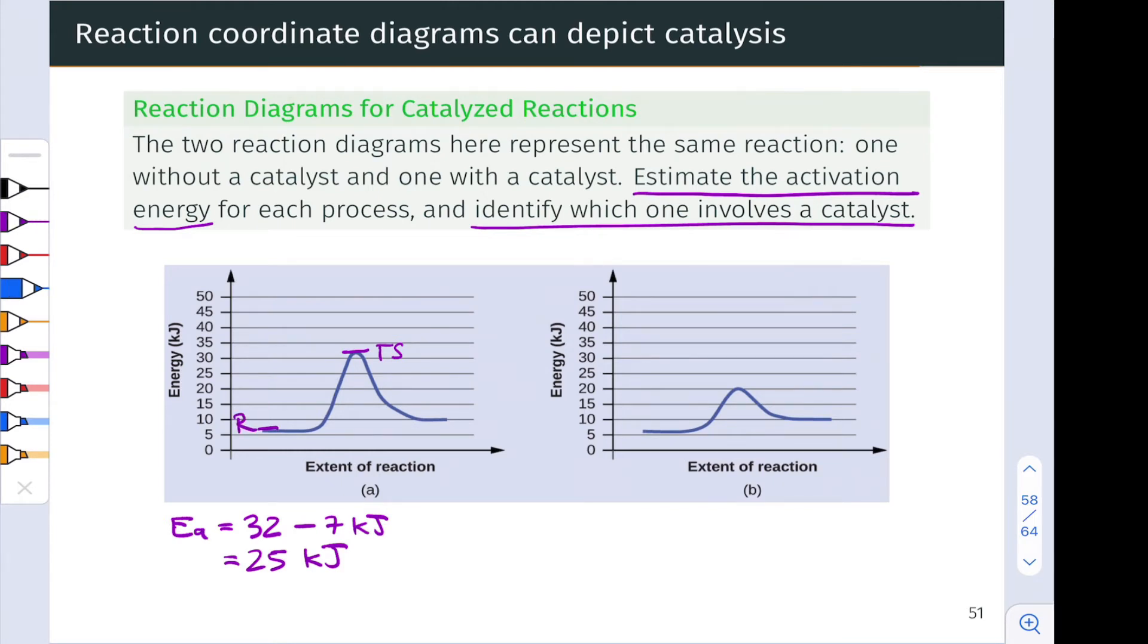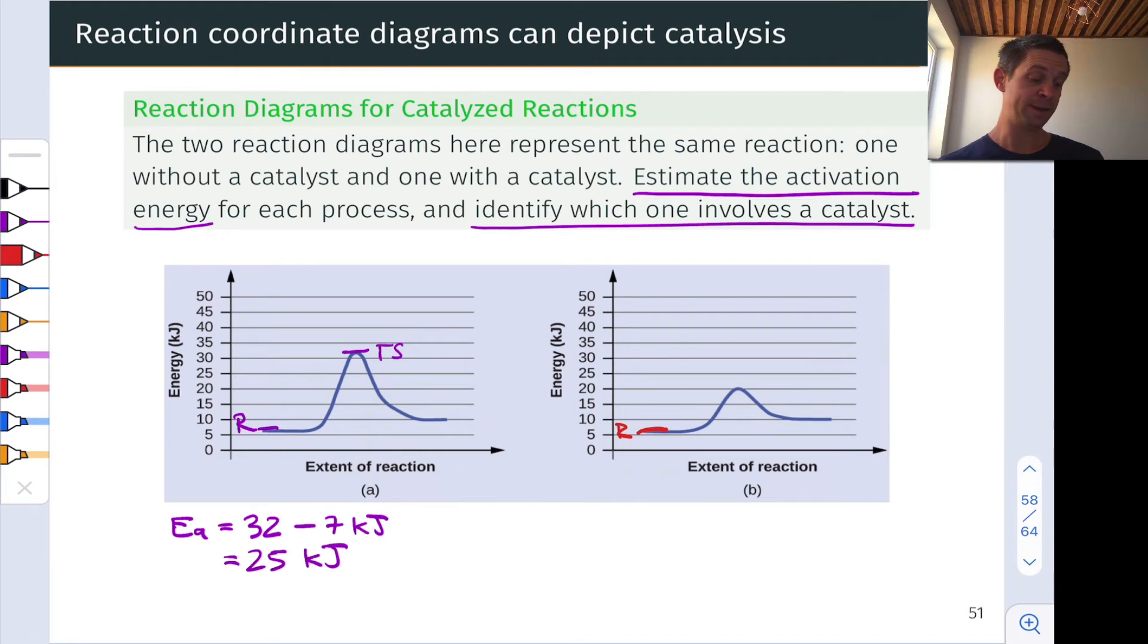Let's do that same analysis for diagram B. We have the reactants here still at about 7 kilojoules. But now the transition state looks to be at something like 21 kilojoules. So now the activation energy is not 32, but 21 kilojoules minus 7 kilojoules for the reactants. And that comes out to about 14 kilojoules. So now to determine which is the catalyzed and which the uncatalyzed pathway, we only need to compare the activation energies. And notice that the pathway on the right, the reaction coordinate diagram on the right, corresponds to a lower activation energy, faster reaction. This is the catalyzed pathway.